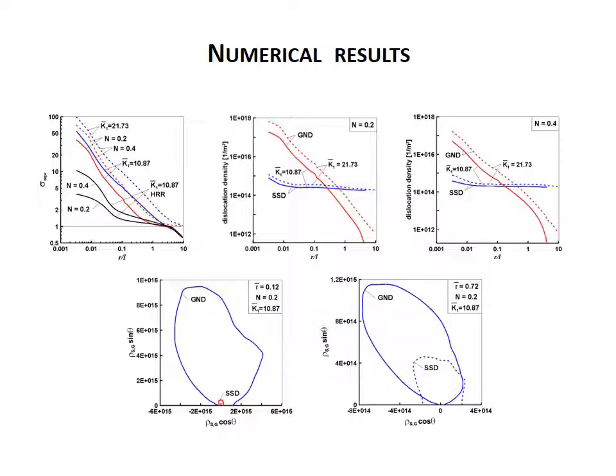The contour plots of the dislocation densities clearly indicate that both geometrically necessary dislocations and statistically stored dislocations are important around the crack-tip. The strain gradient effect associated with geometrically necessary dislocations is responsible for the significant stress increase around the crack-tip. The sensitivity of the considered parts of dislocation densities to the coupled effects of the plastic work-hardening exponent and the crack-tip distance is established.